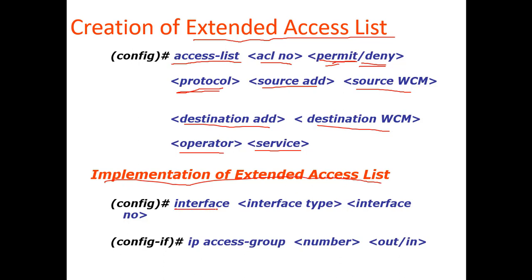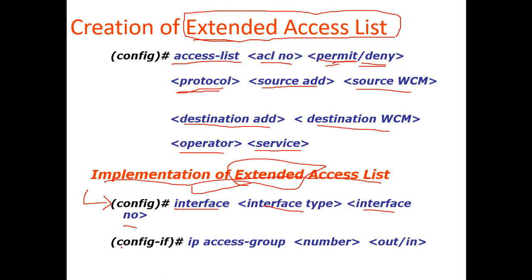The second method of implementing an extended access list is to provide the interface type and interface number. In extended ACL you must also provide the interface information, which is a key difference from standard ACL. You can also manage a group — providing group-level connectivity or denial of service. You can block inbound or outbound traffic for a specific group.